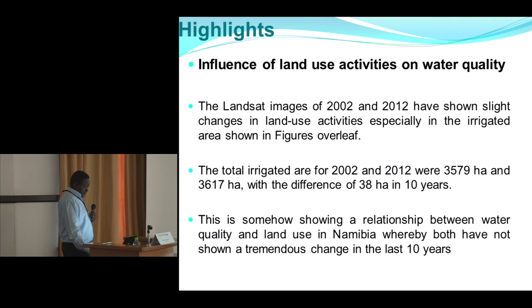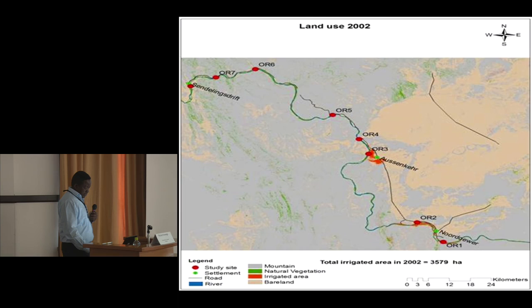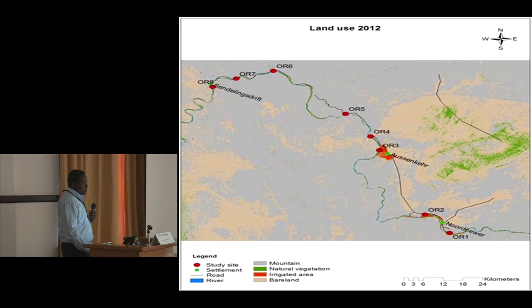For land use influence on water quality, from 2002 to 2012 there was no significant increase in irrigation acreage — over 10 years the difference was only 38 hectares. The total irrigated area in 2002 was 3,500 hectares and in 2012 it was approximately 3,700 hectares.